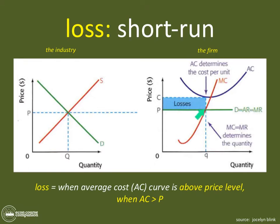This question is telling us to show a loss. That means whatever the costs are of the firm, they are not going to be covered by the price of the product at the profit-maximizing quantity. The way we show that is simple — we extend this quantity upward to this point and then draw our average cost curve.